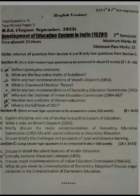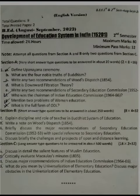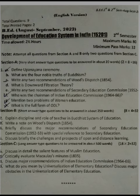We will start with Section A, that is very short answer type questions, and each question comprises of two marks. The first part is: define Upanayana ceremony. Part B: what are the four noble truths of Buddhism? Part C: write any two recommendations of Wood's Dispatch 1854. Part D: what is the downward filtration theory?